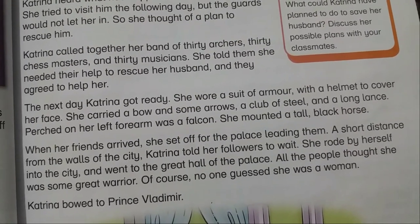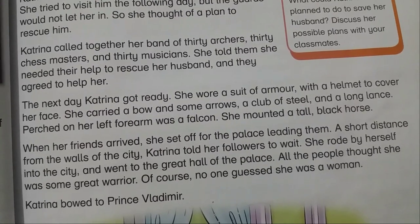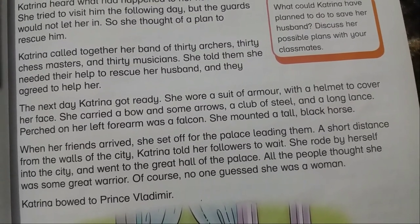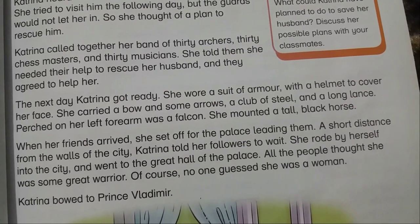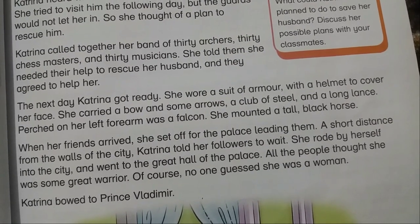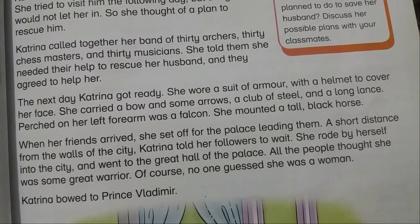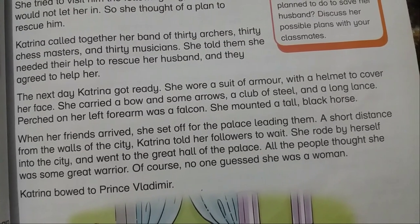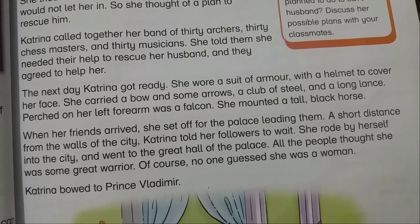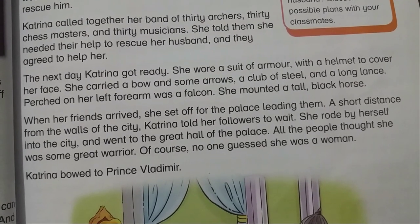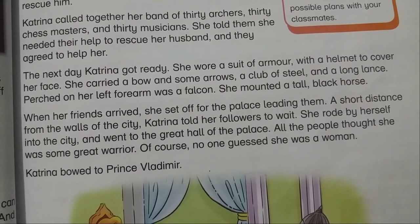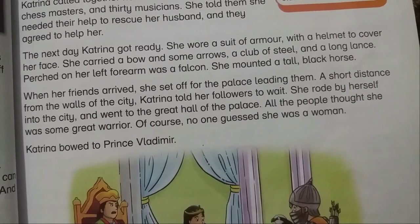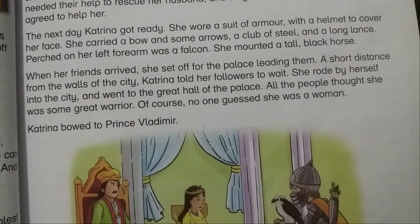The next day, Katerina got ready. She wore a suit of armor with a helmet to cover her face. She carried a bow and some arrows, a club of steel, and a long lance. Perched on her left forearm was a falcon. She mounted a tall black horse. When her friends arrived, she set off for the palace, leading them.